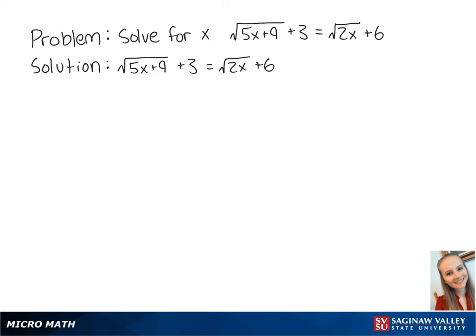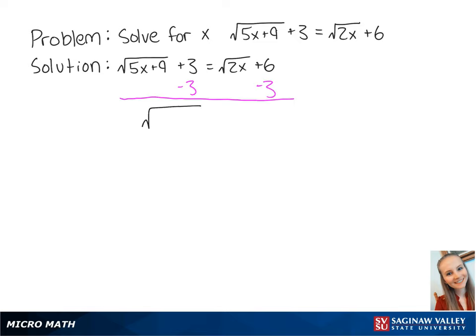Let's solve for x in the equation: the square root of 5x plus 9, plus 3, equals the square root of 2x plus 6. To isolate the radical on the left side, we're going to subtract 3 from both sides of the equation. This gives us the square root of 5x plus 9 is equal to the square root of 2x plus 3.